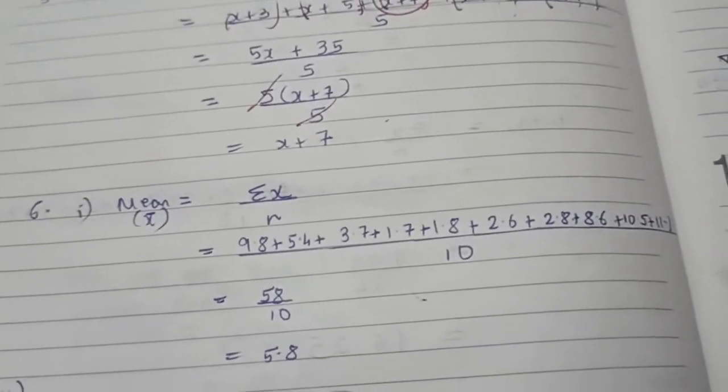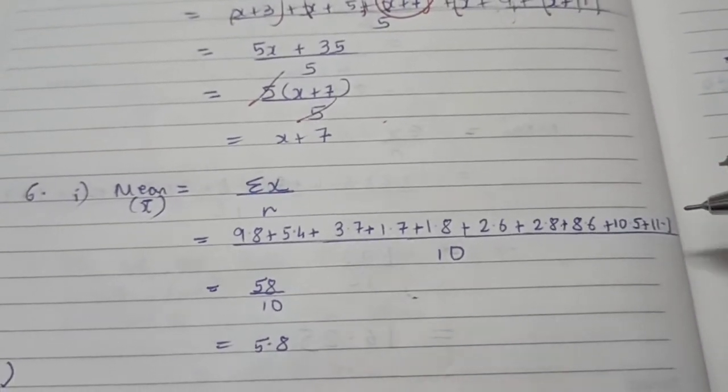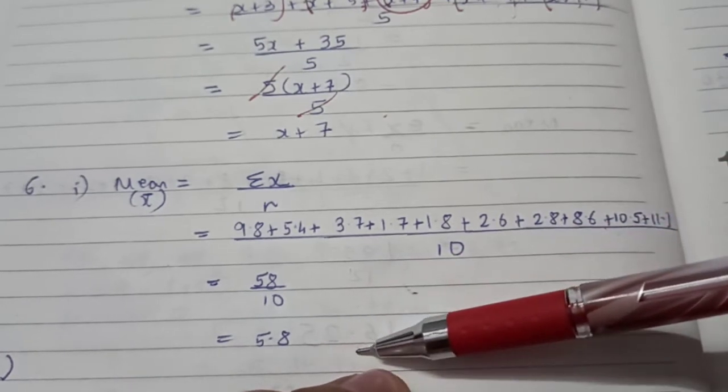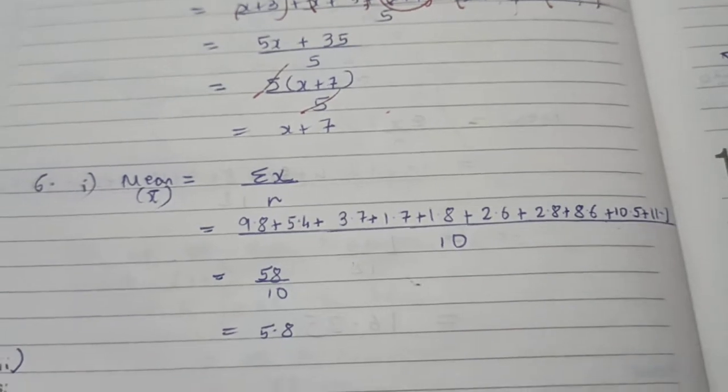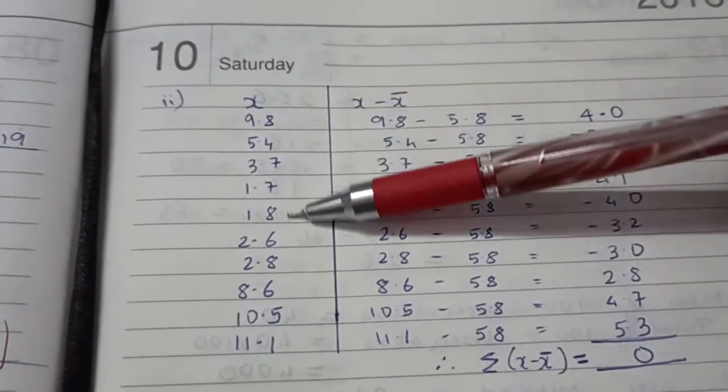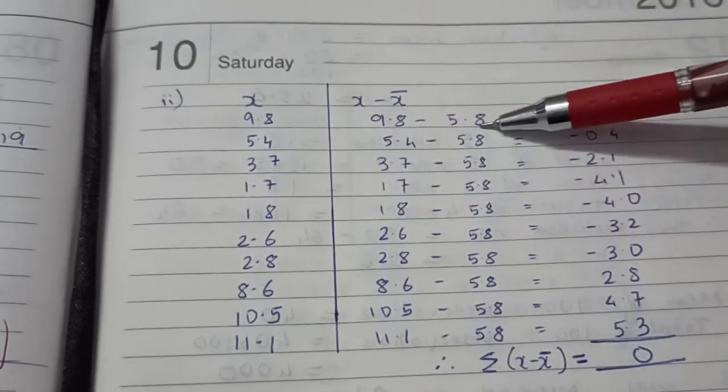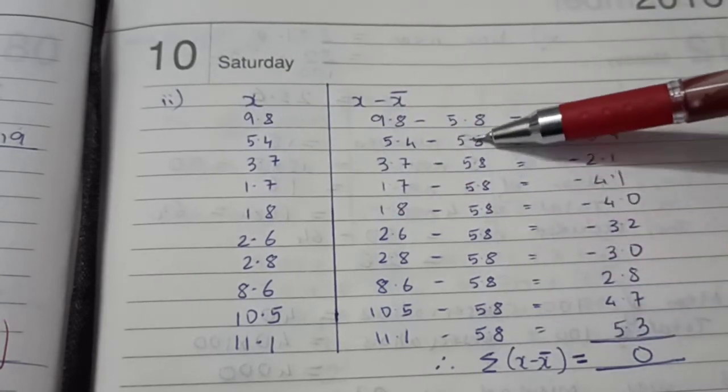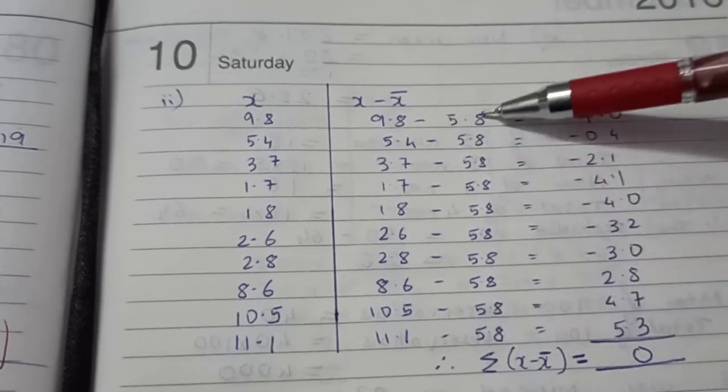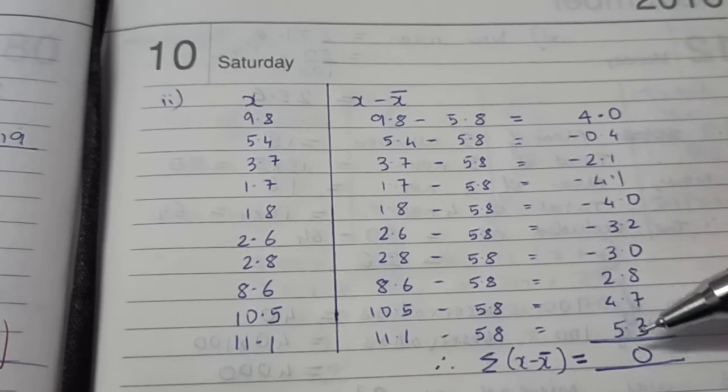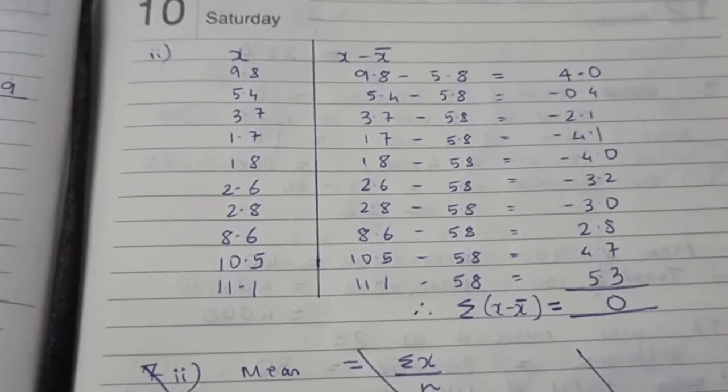So let's work it out. Finding the mean was pretty straightforward. Be very careful while adding, you should not make any silly mistakes. I got 58 upon 10, which is 5.8. And roman number 2, I jotted down all the x values and I found the difference between each of these values with the mean. The mean is 5.8 as we found out in roman number 1. And sometimes the differences are negative, sometimes they are positive, but when I add them, indeed it comes up to be 0. That's what they wanted us to find out.